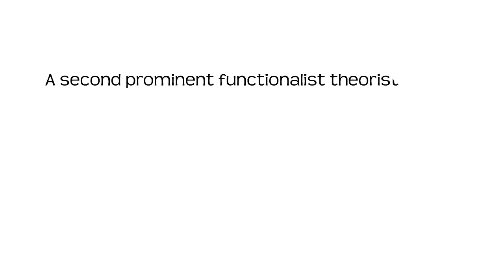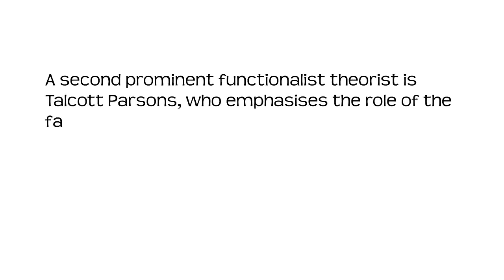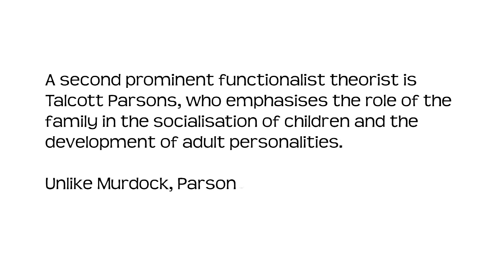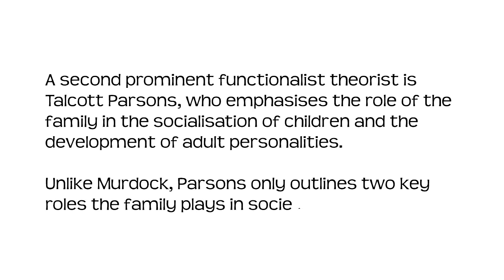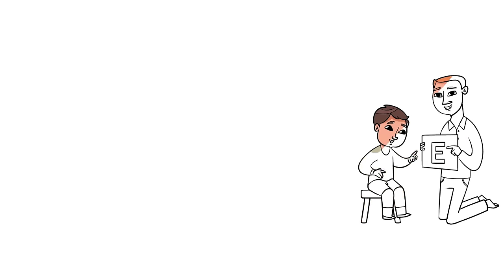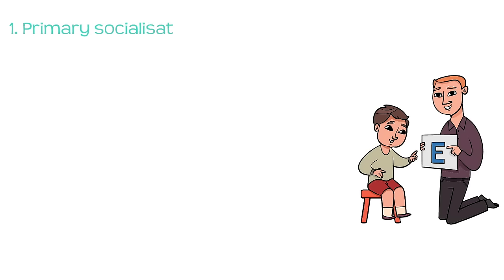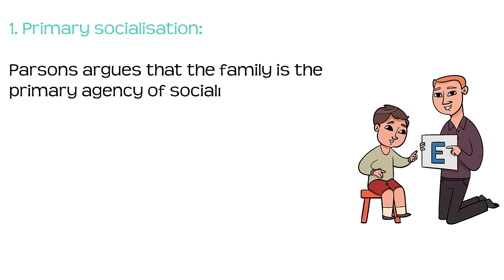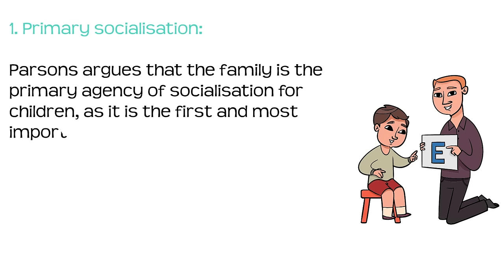A second prominent functionalist theorist is Talcott Parsons, who emphasises the role of the family in the socialisation of children and the development of adult personalities. Unlike Murdoch, Parsons only outlines two key roles the family plays in society. Number one: primary socialisation. Parsons argues that the family is the primary agency of socialisation for children, as it is the first and most important social institution that children encounter.